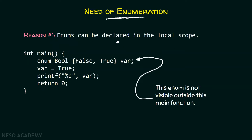Reason number one: enums can be declared in the local scope. Here we can declare enums in the local scope — this enum is not visible outside of this main function. It is declared within the local scope only, so other functions cannot see this enum. With hash define, this is not possible. We know that hash define has to be written at the top of the program, hence it is in the global scope and every function can see it. While in this case, enum bool is visible only within this function.